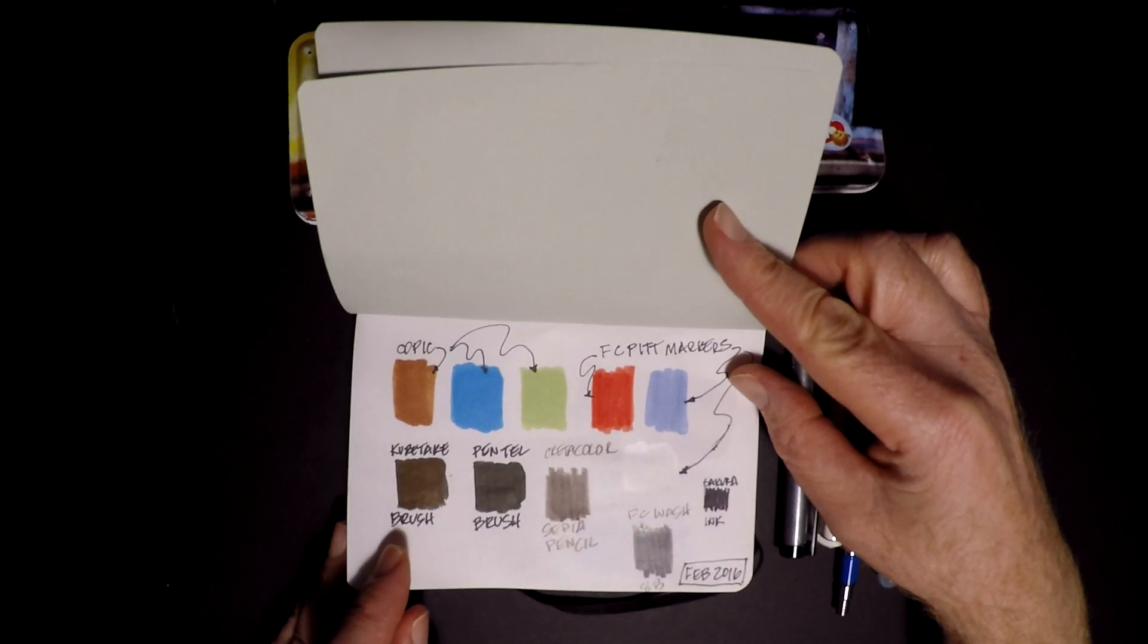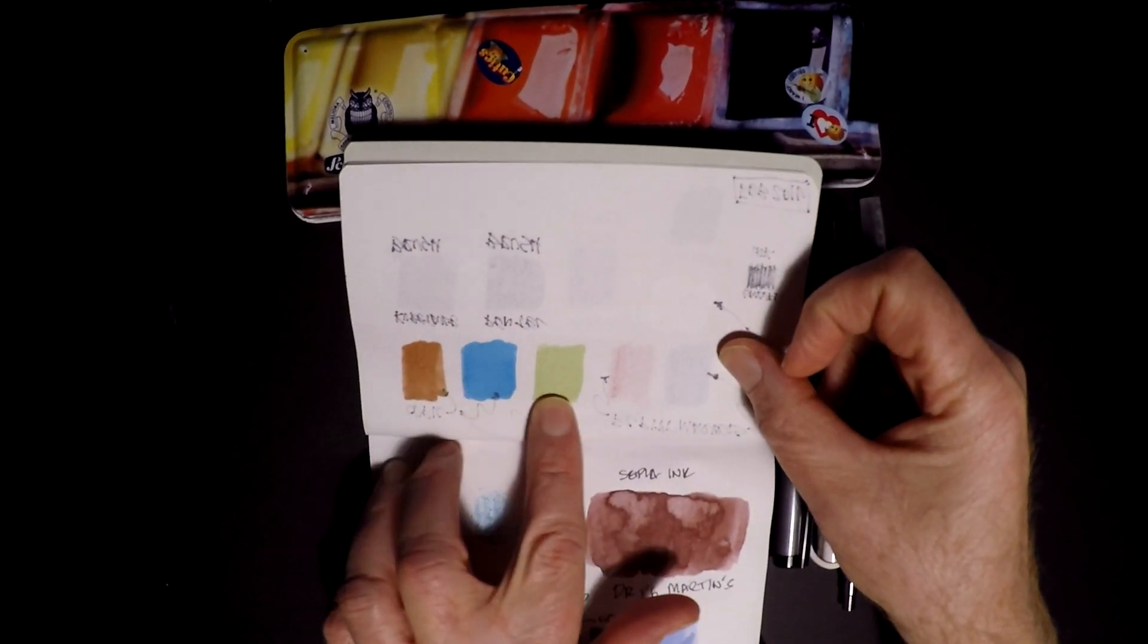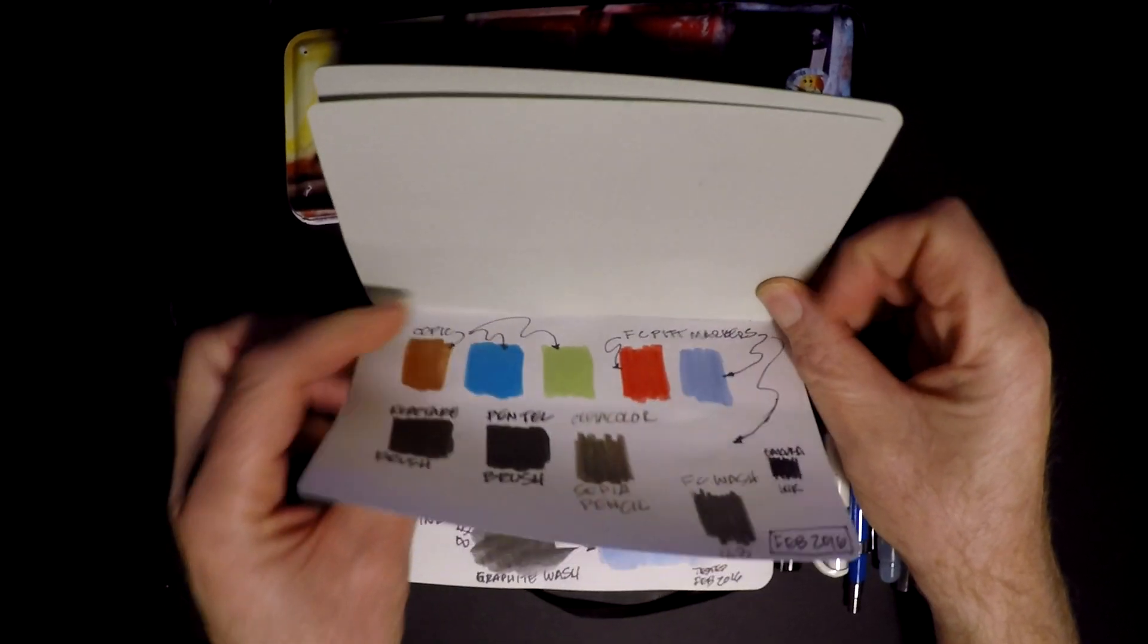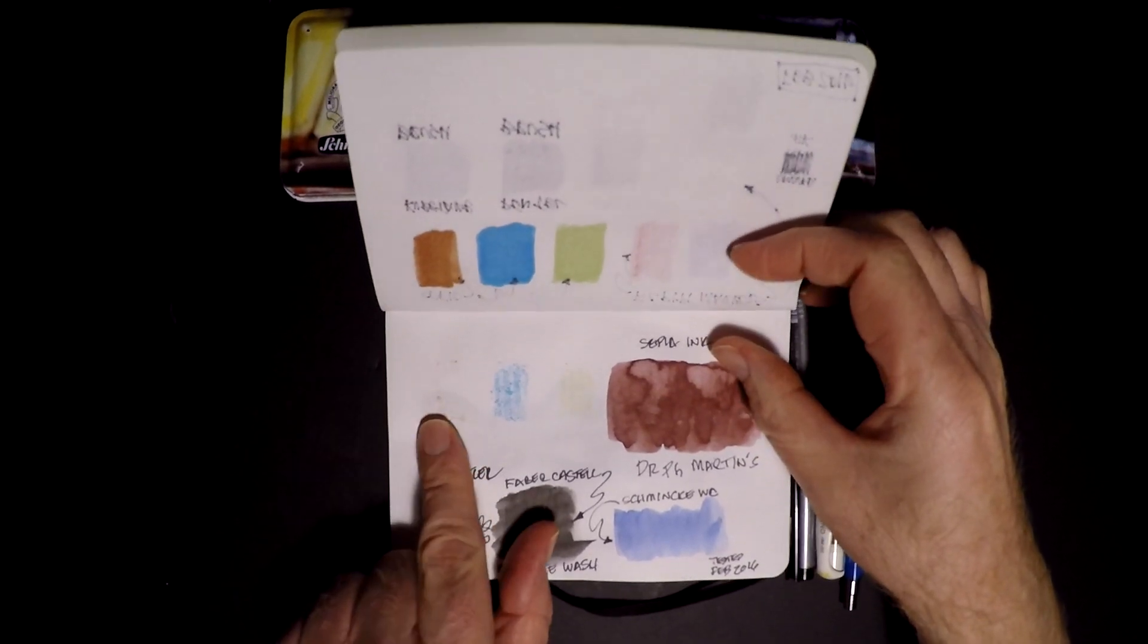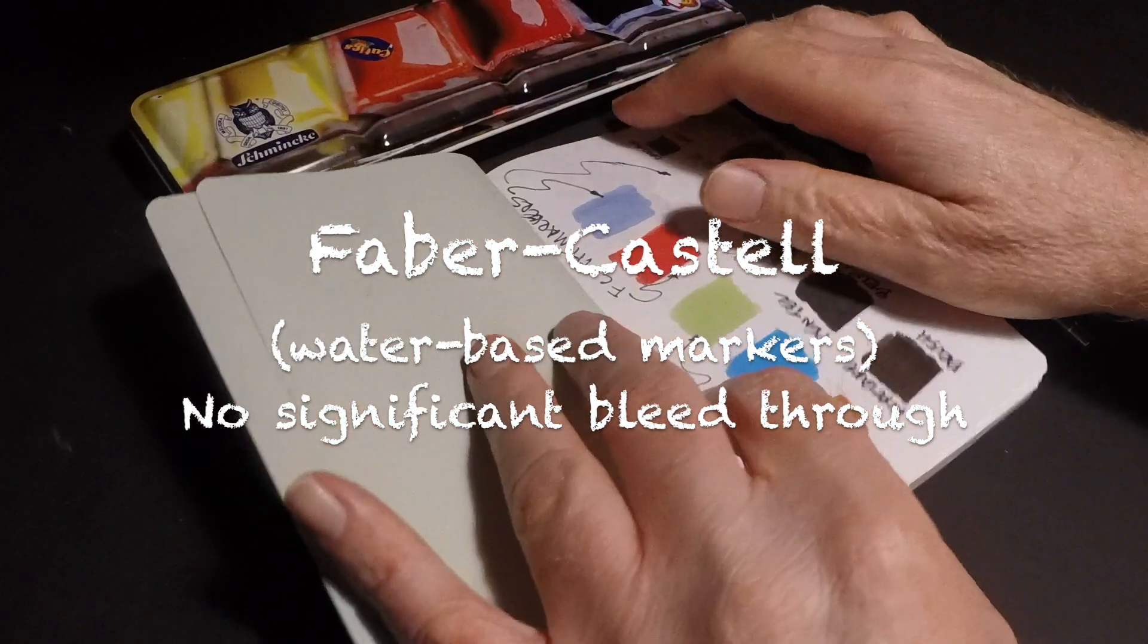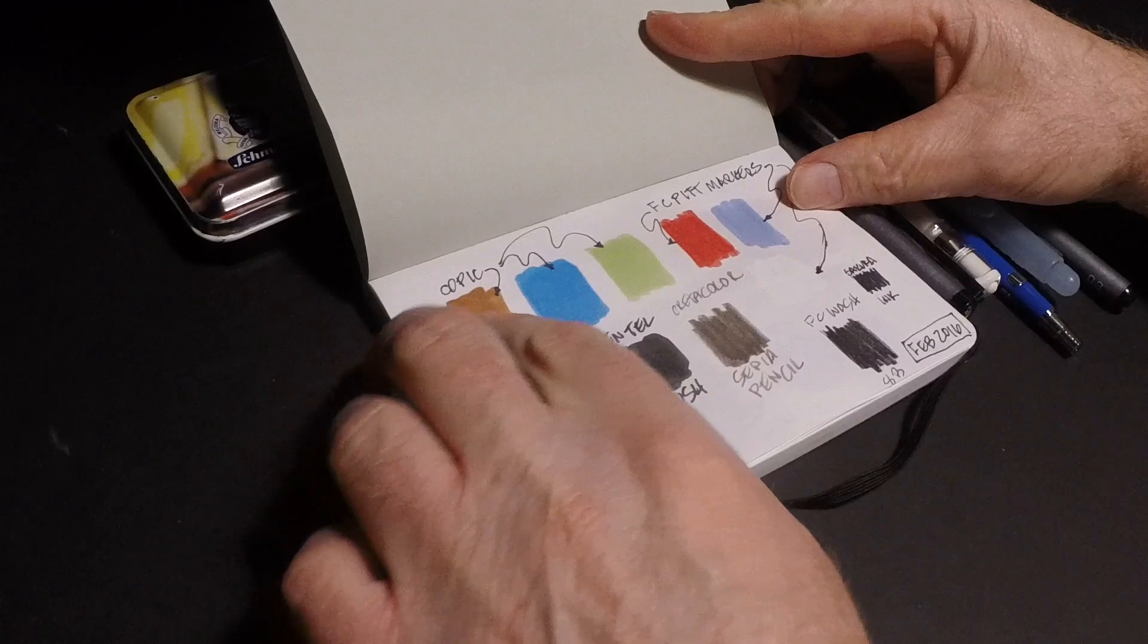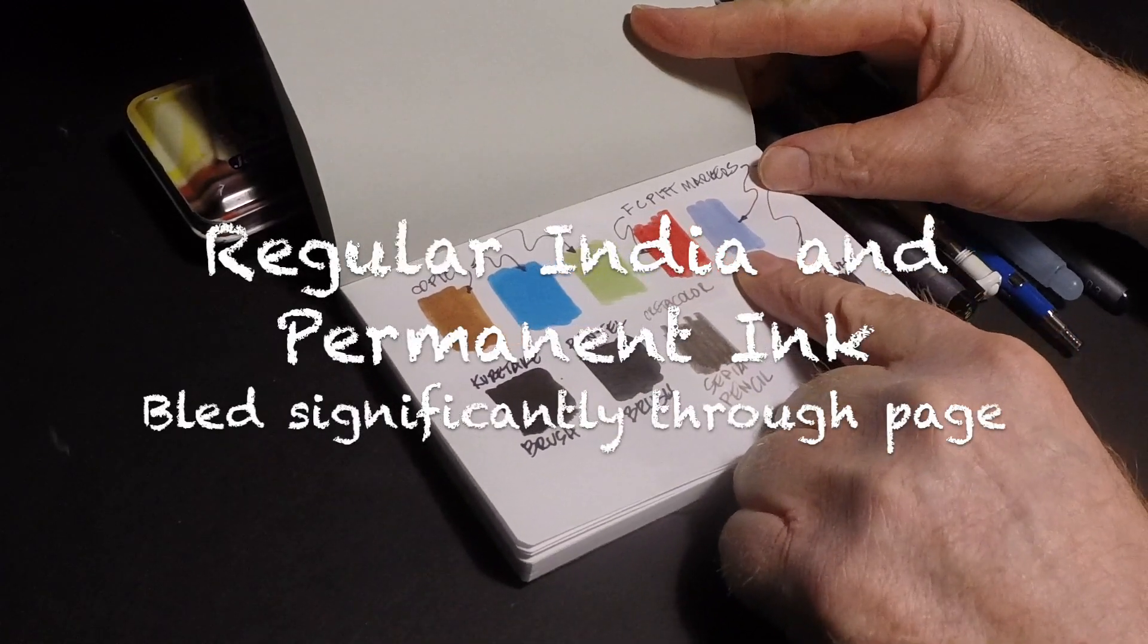So, here I've got the Copic marker, the Faber-Castell Pitt markers, some graphite. And if I turn the page, you can see where the Copics, they basically come right through the page. An alcohol-based marker is going to do that on a lot of different papers. Only the thickest of papers will resist a tremendous amount of bleed-through. Now, on the Faber-Castells, not so much. But here, I was just pointing out where it bled through three full pages. So, well, two anyway. They bled through the backside of this page and, again, onto the next page. So, that's not great. But, again, the notebook really isn't designed for that, or this journal.